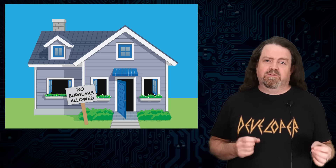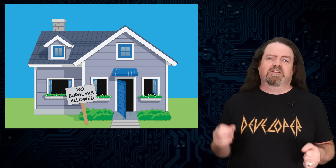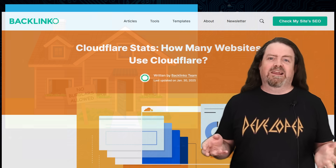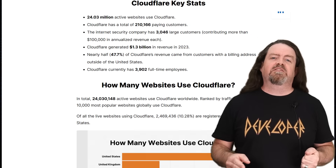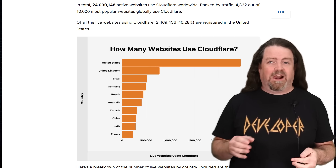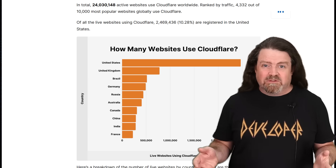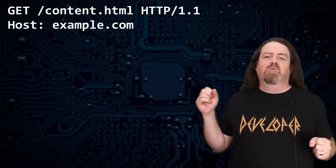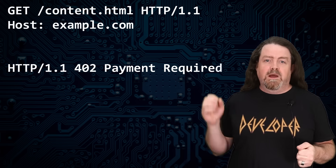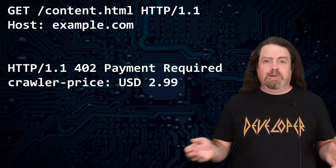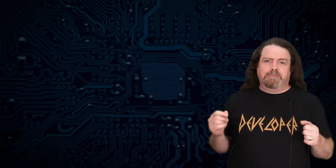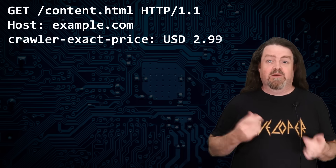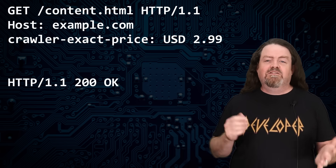In theory, Cloudflare's proposal is pretty simple. If your website is hosted behind a Cloudflare proxy — and according to Backlinko, 44% of the world's 10,000 busiest websites use Cloudflare, so that's a lot of websites — then when an AI crawler comes along asking for content, you can reply with an HTTP 402 Payment Required and give them a price. And if the crawler wants to pay, they try again — they include a 'Crawler-Exact-Price' header indicating yes, I will pay that much. This is called reactive negotiation.